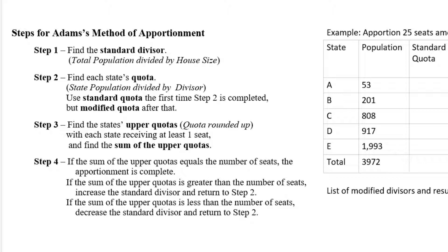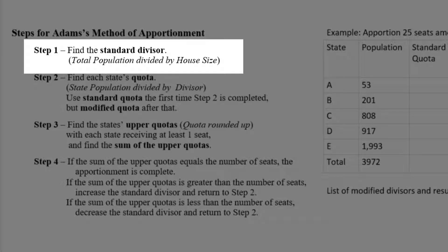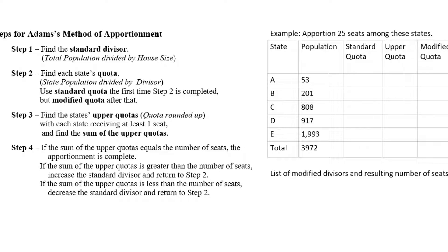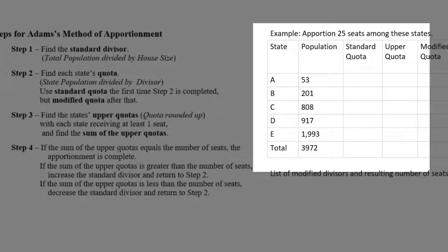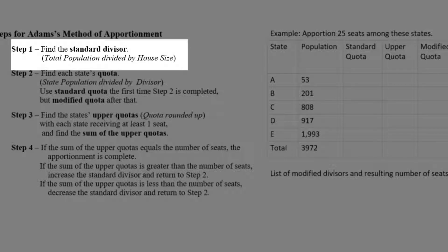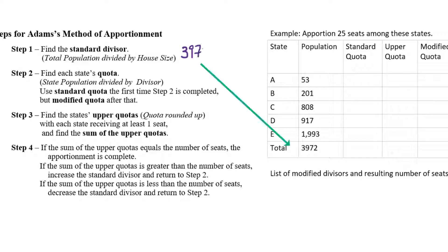So Adam's method of apportionment, like all apportionment methods, starts by finding the standard divisor. So in our example, we have to apportion 25 seats to states with populations of 53, 201, 808, 917, and 1,993. The standard divisor is the total population, so the sum of the state's populations, which is 3,972, divided by the house size, which is the number of seats, in this case, 25. So for step one, we have to divide 3,972 by the number of seats, which is 25, and that's going to give us a standard divisor of 158.88.